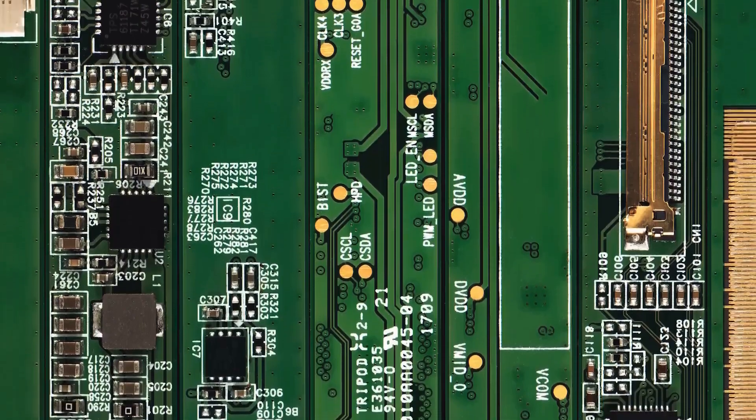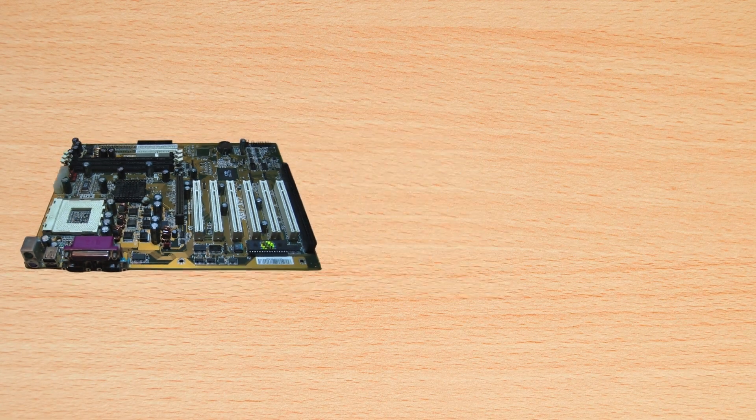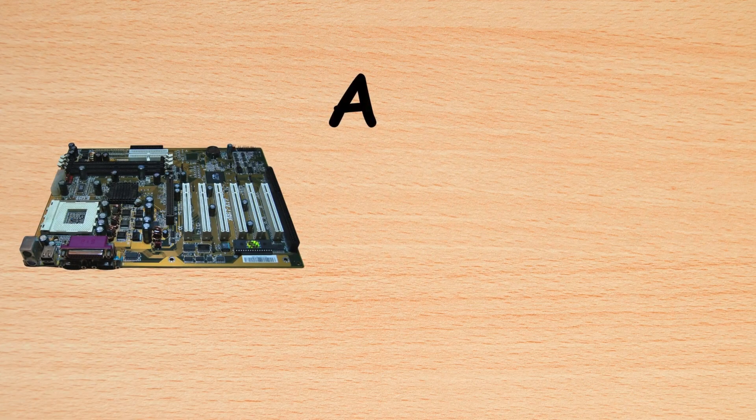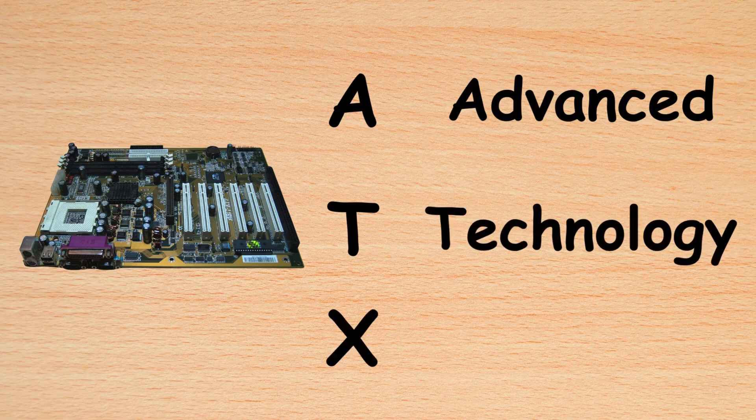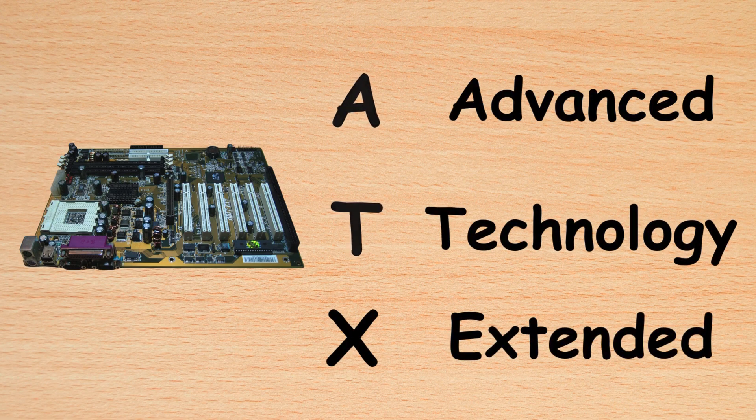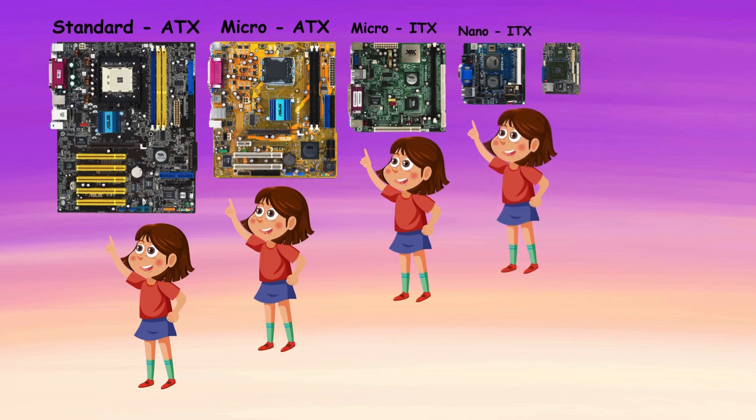And, the bonus learning. There are different types of motherboard, and the most common type of motherboard is ATX. Here, A stands for Advanced, T stands for Technology, and X stands for Extended. Different types of motherboard are Standard ATX, Micro ATX, Micro ITX, Nano ITX, Pico ITX.